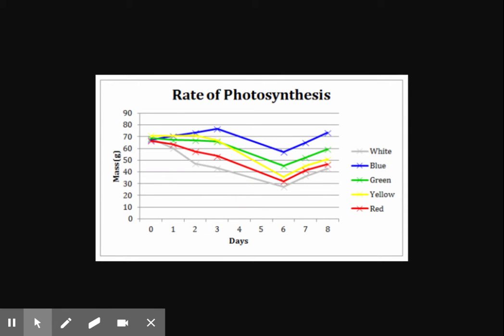This is a description of the rate of photosynthesis graph. The mass of a plant is directly related to its rate of photosynthesis, which is necessary for it to live and grow.